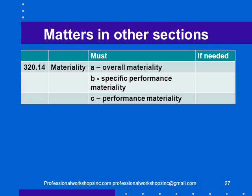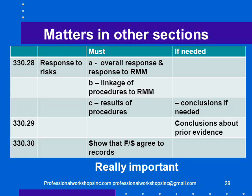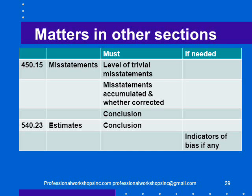For materiality, you document overall materiality, specific performance materiality, and performance materiality. For response to risk — another most important section — you document your overall response and your response to risk of material misstatement by assertion. You have to document the linkage of the procedures you performed to your assessment of risk of material misstatement, the results of your procedures and conclusions, and if you've used prior evidence you document your conclusions about that. You also document that the financial statements agree to the records of the client. For misstatements, document the level of trivial misstatements, accumulate misstatements and whether corrected, and a conclusion on estimates including a conclusion and indicators of bias if any.